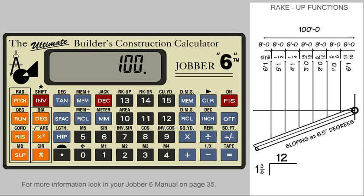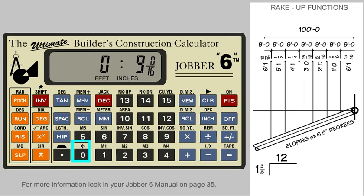We now tell the calculator this is our run. We should then go back to the standard mode. Now we can enter our 9-foot default spacing. With these three knowns in the calculator — degree, run, and spacing — we can activate the Rake Up mode by pressing the Invert and Rake Up keys. Now by pressing the Plus key, we will get a new drop-down dimension for our drain at each of the 9-foot horizontal spaces.